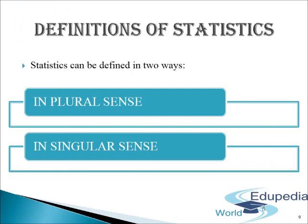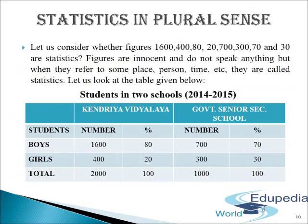Statistics can be defined in two senses: in plural sense and in singular sense. Statistics defined in plural sense — let us consider whether figures 1600, 400, 80, 20, 700, 300, 70 and 30 are statistics.